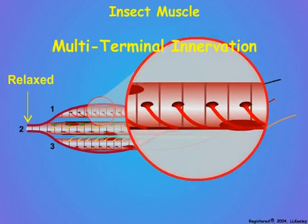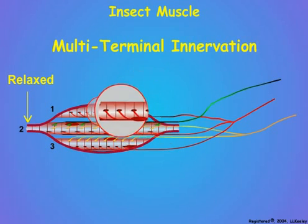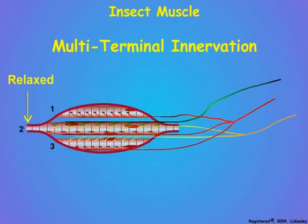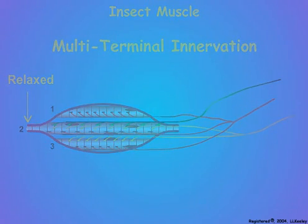Let us now see how three neurons can account for the range of both rapid and fine controlled graded movements that insects can make.